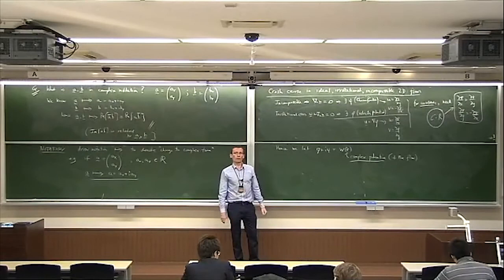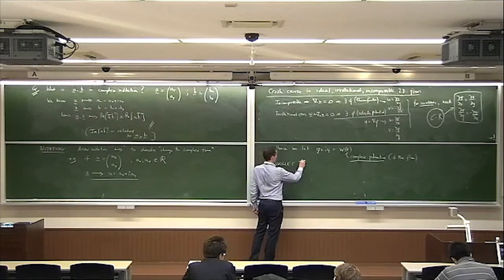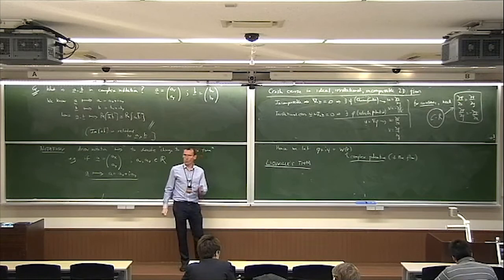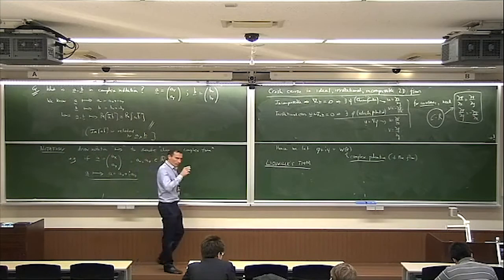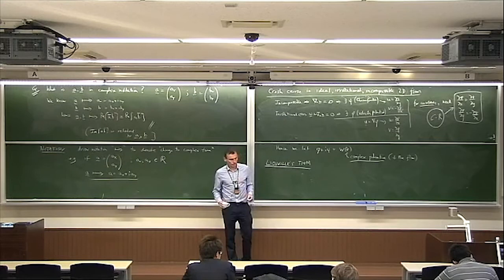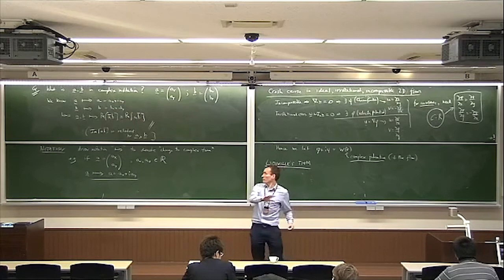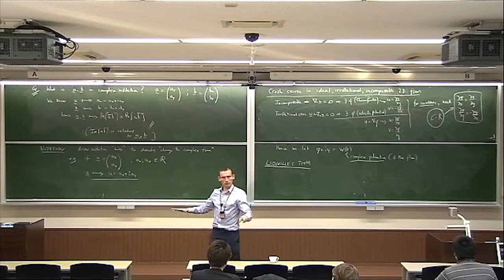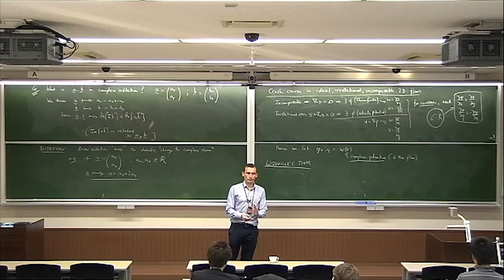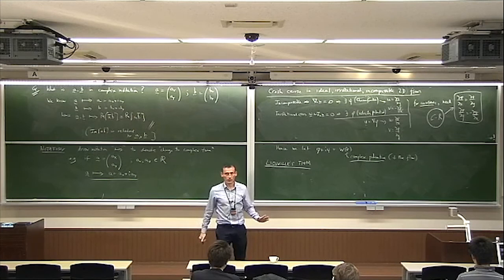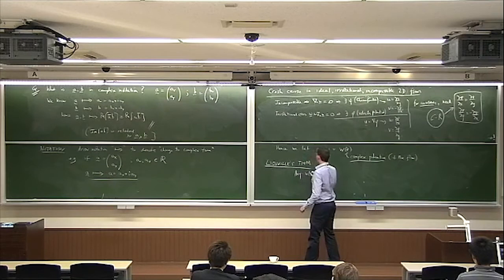So for ideal incompressible irrotational 2D flow, there's a stream function because it's incompressible, and a velocity potential because it's irrotational. Requiring these to be consistent gives Cauchy-Riemann equations, which means there's an analytic function sitting in the background — the complex potential. We let w(z) equal phi plus i psi, which we call the complex potential of the flow. There's a very important theorem in complex analysis called Liouville's theorem — can anybody tell me what it is?